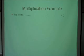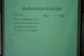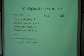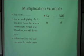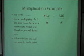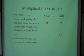Now let's do multiplication. You write 6s equals 180. Notice when a number and letter are side by side, that means multiply. So we are multiplying s by 6, and we need to do the inverse operation — divide by 6. What we do to one side, we do to the other. The two 6s cancel out, leaving s by itself. 180 divided by 6 is 30, so s equals 30.